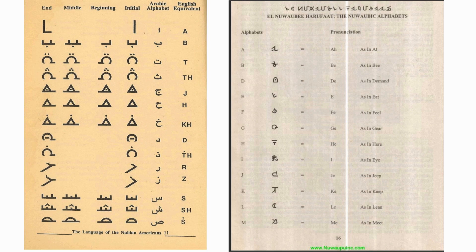But these languages right here — the languages Malachi York brought — are ascended languages. These are actual languages. They're the best languages on earth. There's no other languages on earth like these languages. They don't come from anywhere — they are stemmed from our ancient languages, but made pure.